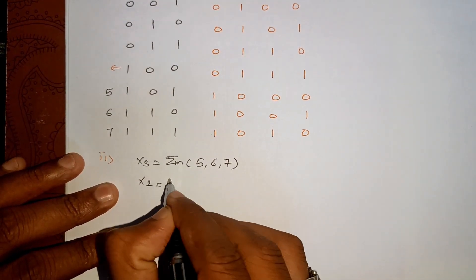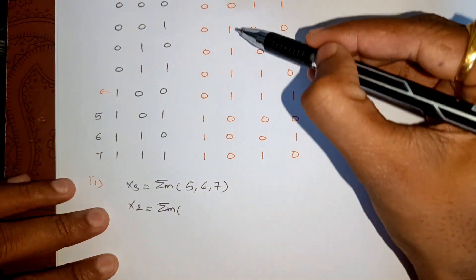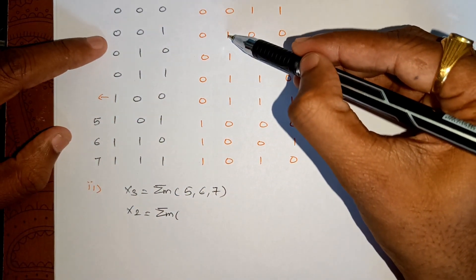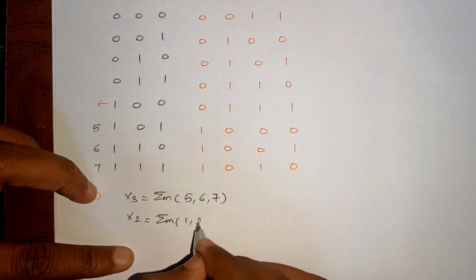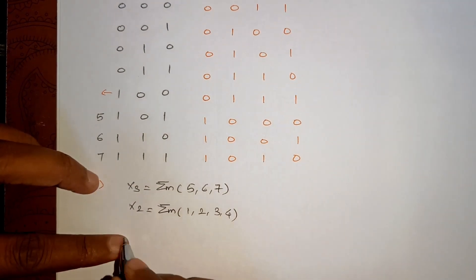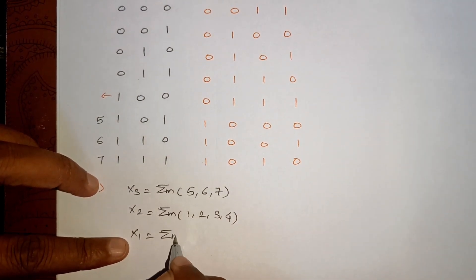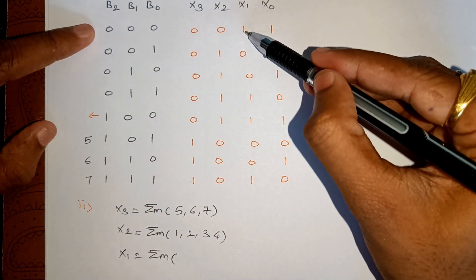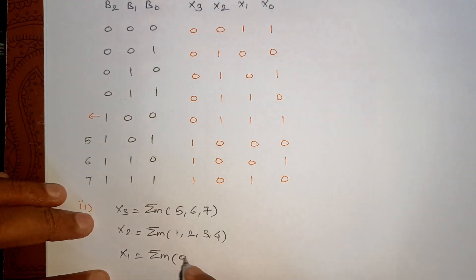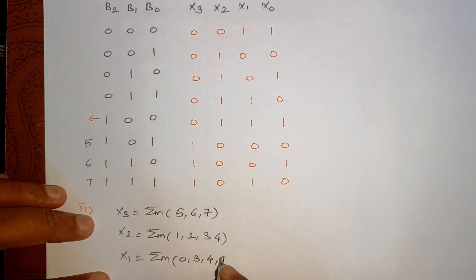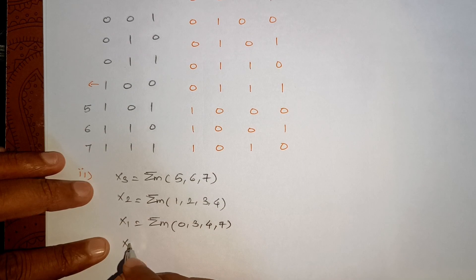Next, X2. If you look, X2 is 1 for 1, 2, 3, and 4. 1, 2, 3, 4. Similarly, X1 is high for 0, 3, 4, and 7.